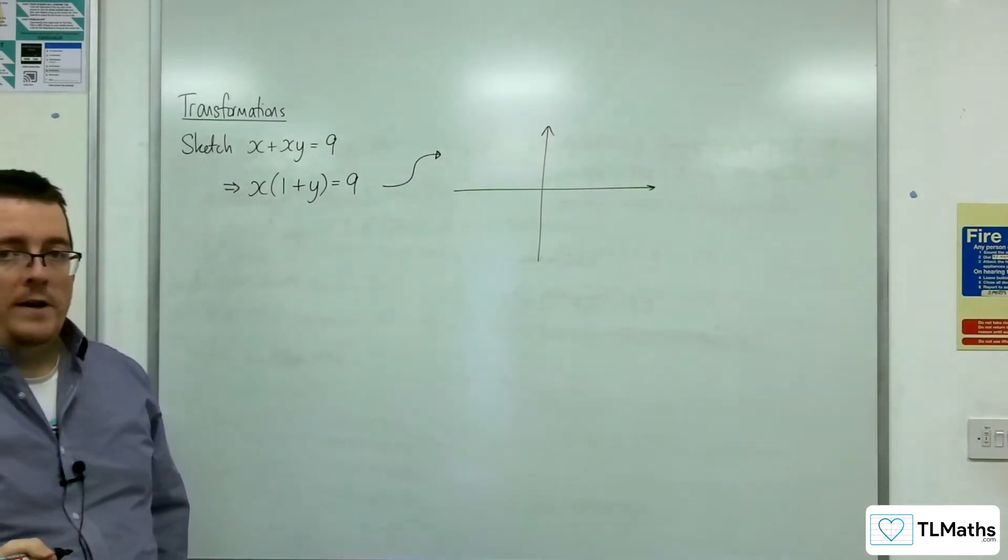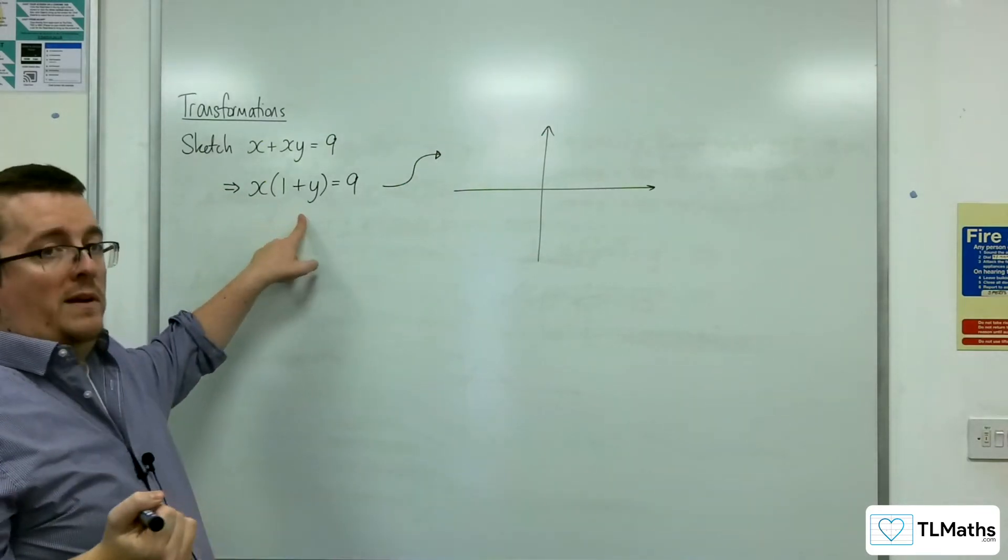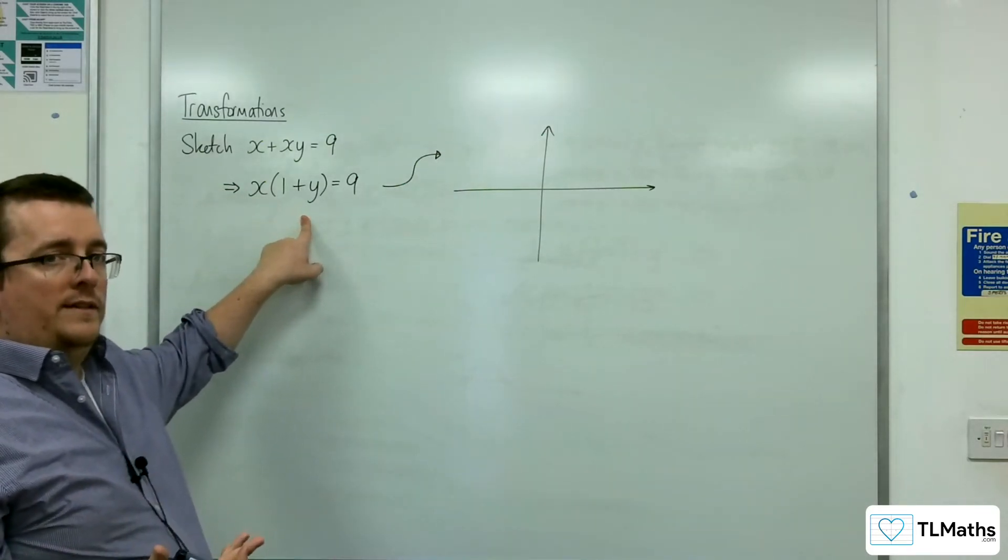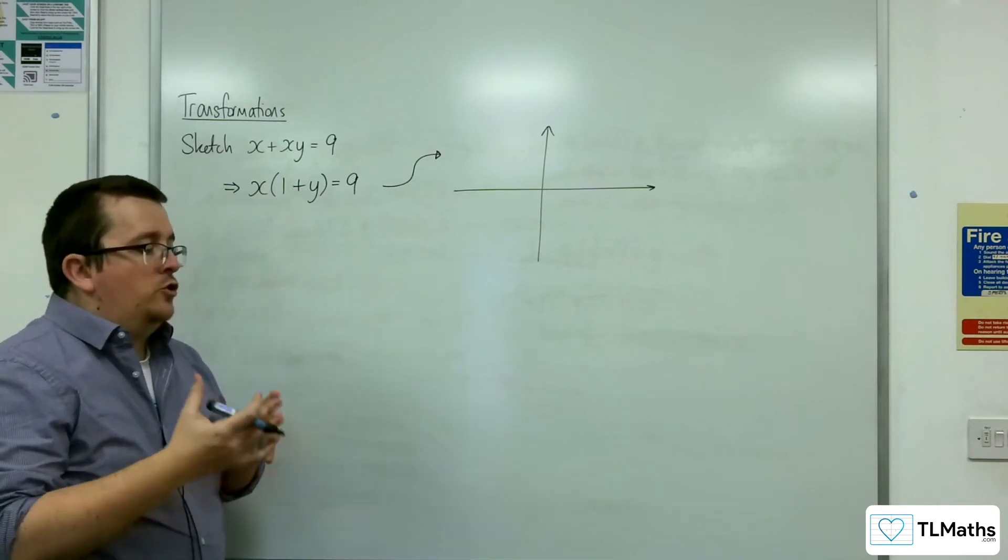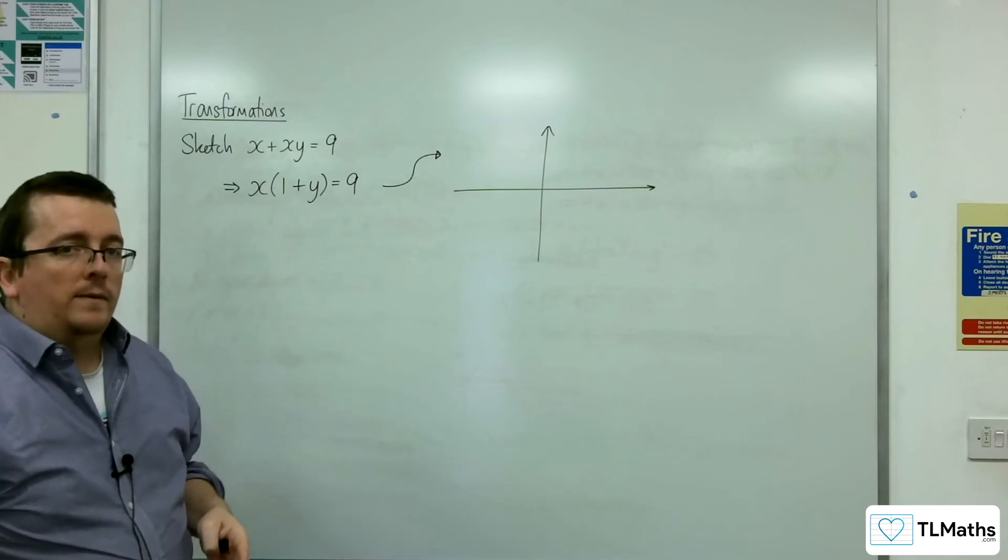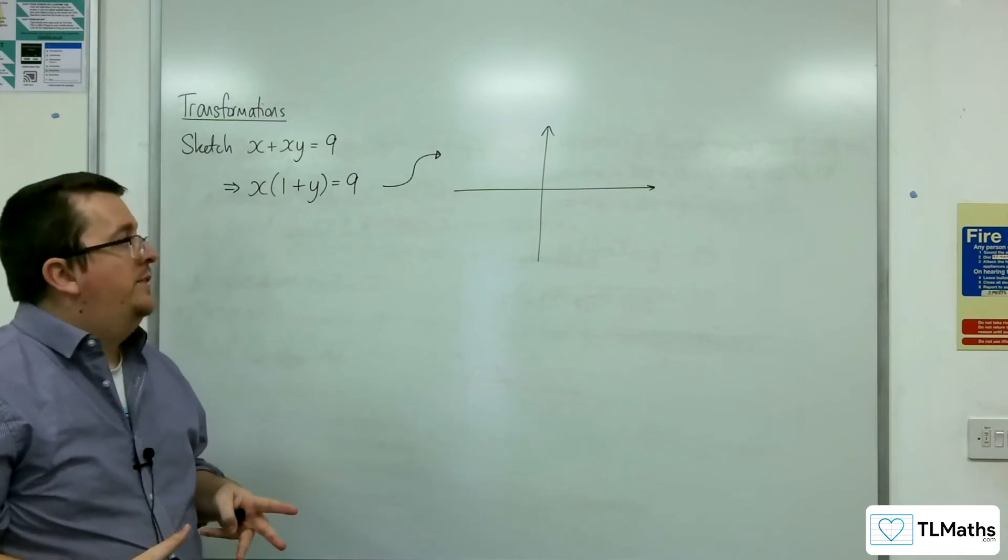So xy equals 9. But the y has been replaced with y plus 1 effectively. And so that means that we are translating by the vector 0 minus 1. So it's dropping one unit downwards.